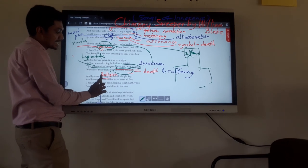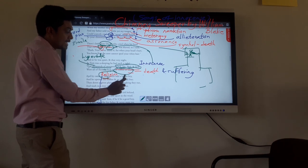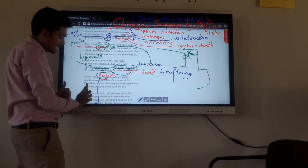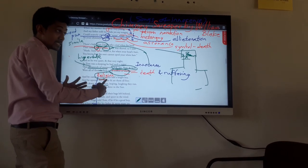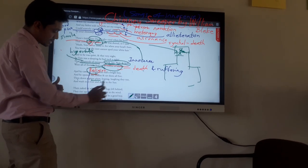And by came an angel - the angel in religion is about good behavior - who had a bright key and opened the coffins and set them all free. And then down a green plain - green means the future, a good future. Leaping, laughing, they run, and washed in a river and shine in the sun.